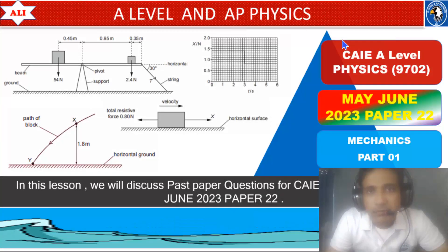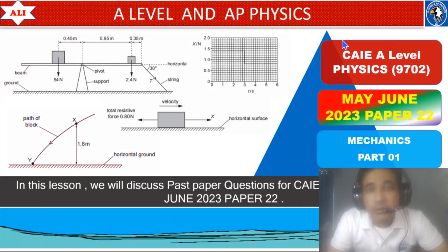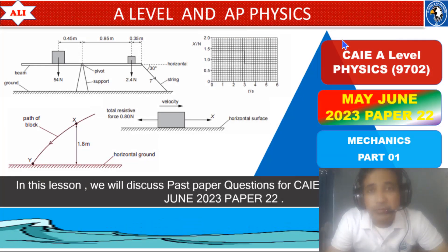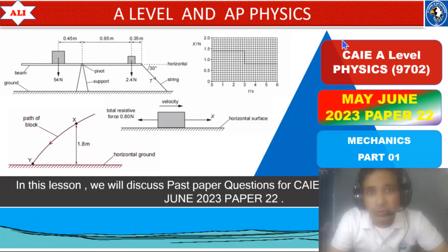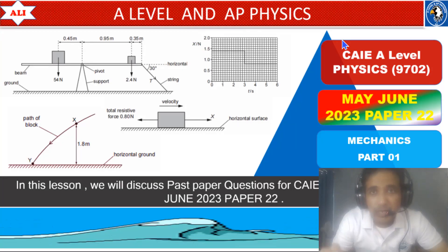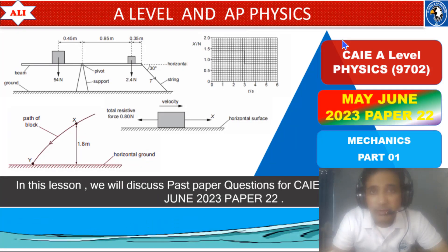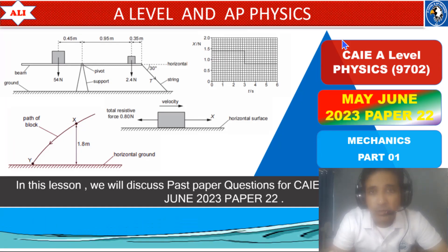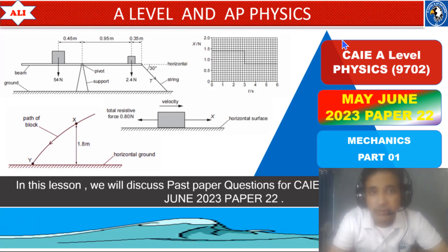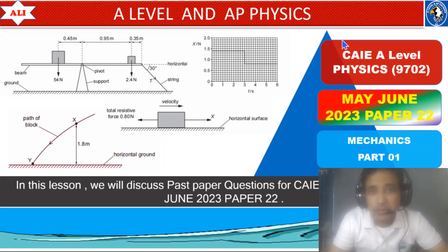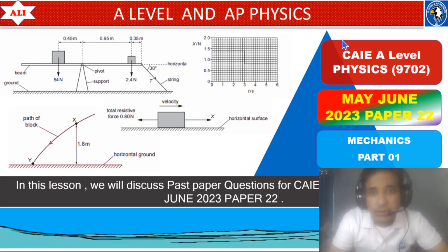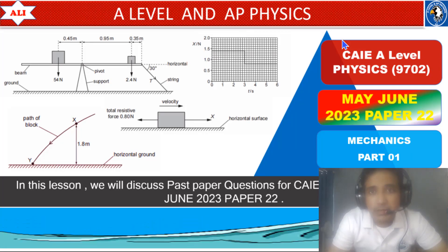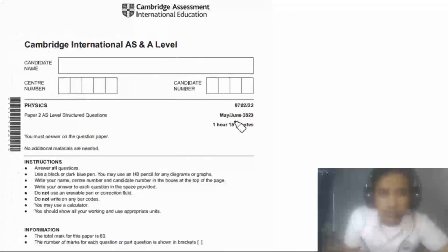Welcome to A-Level and AP Physics. In today's lesson, we will discuss past paper questions from May June 2023, Paper 2, Variant 2. We will discuss these questions in detail so you can improve your conceptual understanding of AS Physics and have a better understanding of these questions. Let's study together, let's improve together. Today we are talking about May June 2023, Paper 2, Variant 2.